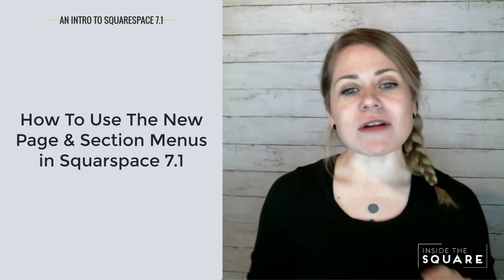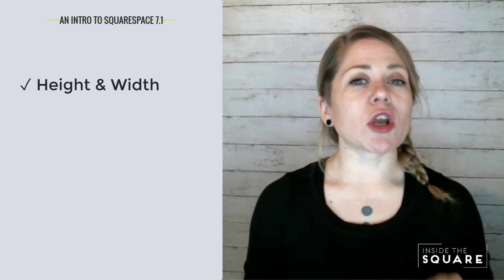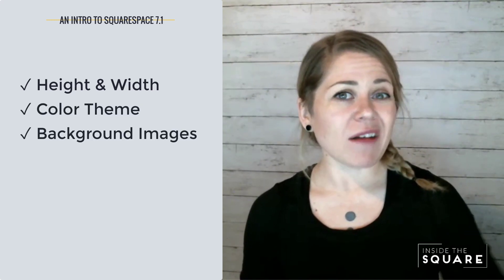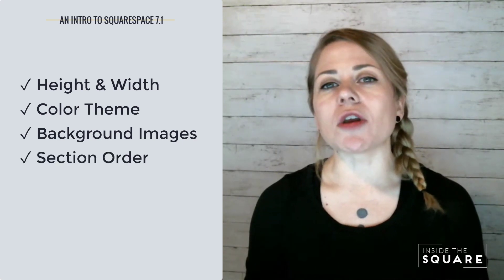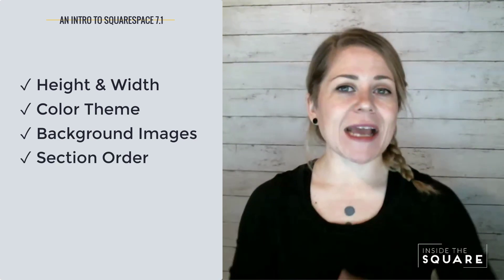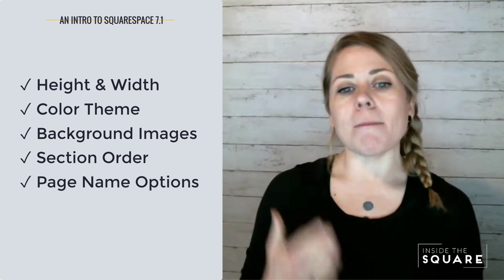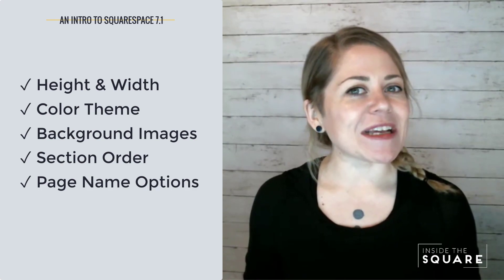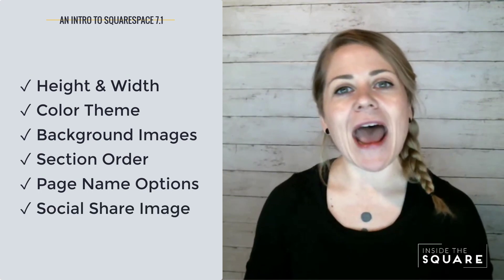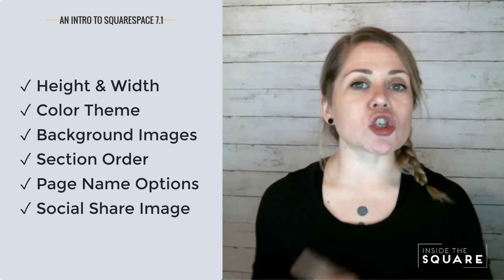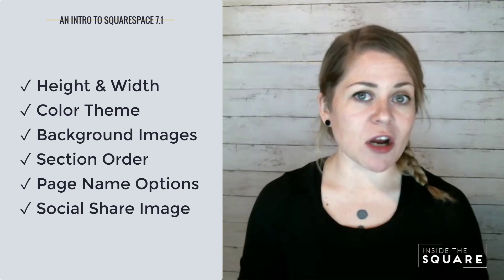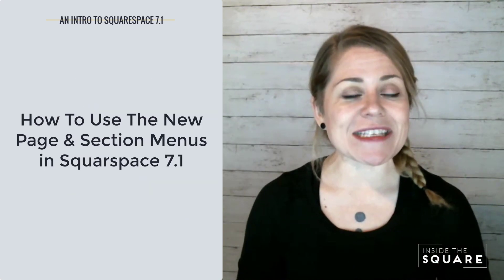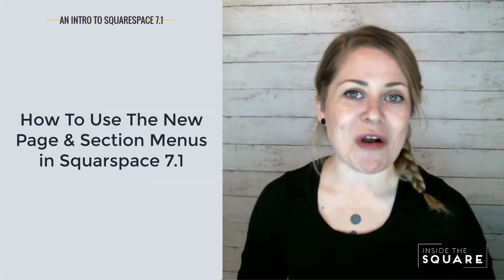I'm going to show you how to set the height and width of a section, how to change the color of a section as well as add an image background. I'm also going to show you how to change the order of the sections and how to change the page title, menu title, and URL for an individual page. And last but not least, how to add a specific image that will show up when a page URL is shared on social media channels like Facebook. So lots to cover today — I'm going to hop into my demo site and we'll get started.